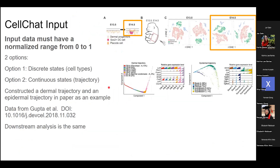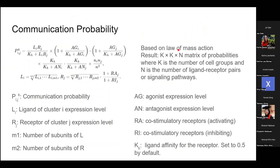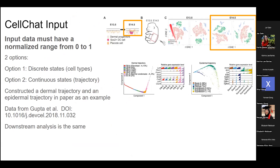About CellChat input: you have two options. You can do discrete states — the same as CellPhoneDB, where you have cells annotated with their cell types — or you can input what they call continuous states or a trajectory. The continuous state input uses pseudo-time analysis built into CellChat.